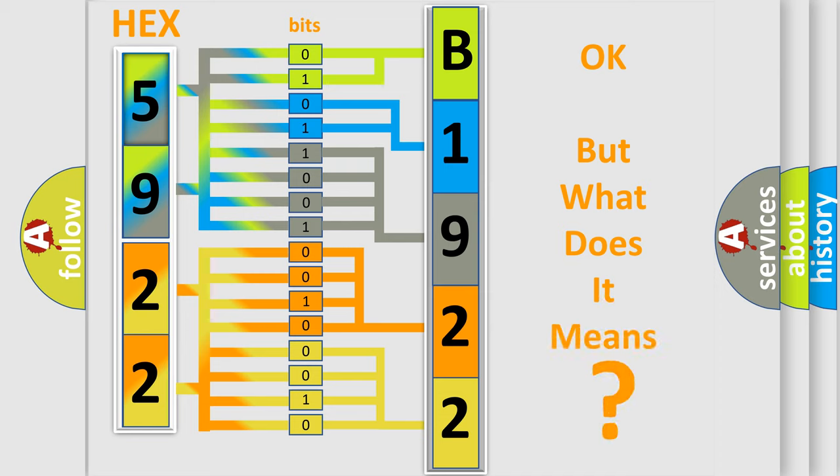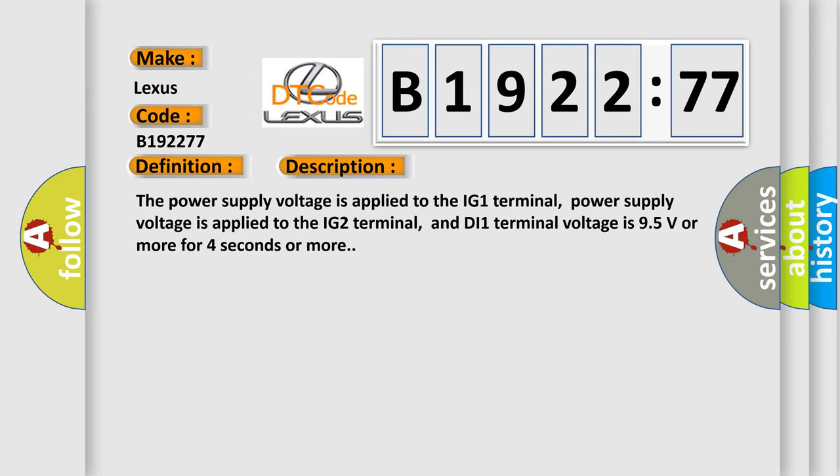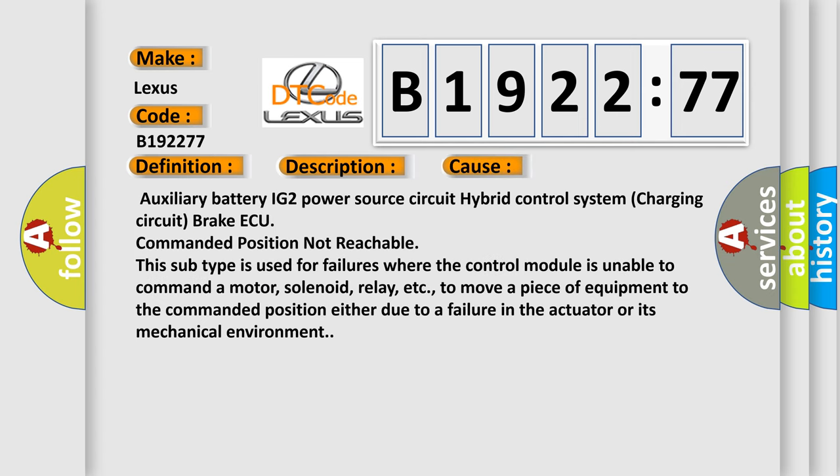The number itself does not make sense to us if we cannot assign information about it to what it actually expresses. So, what does the diagnostic trouble code B192,277 interpret specifically for Lexus car manufacturers? The basic definition is ignition one or ignition. And now this is a short description of this DTC code. The power supply voltage is applied to the IG1 terminal, power supply voltage is applied to the IG2 terminal, and DI1 terminal voltage is 95 volts or more for 4 seconds or more. This diagnostic error occurs most often in these cases.